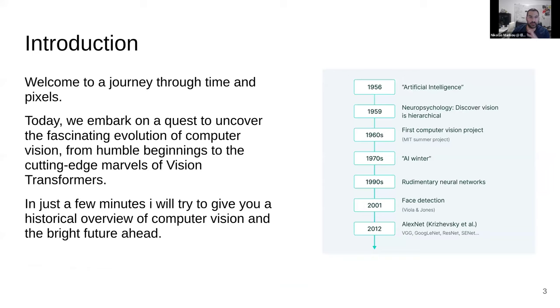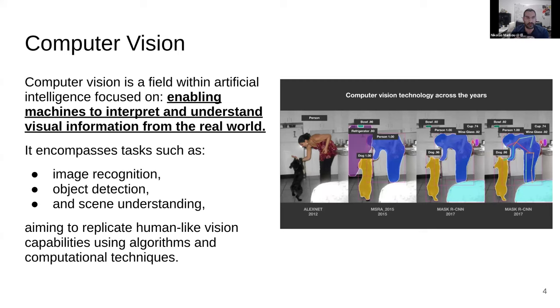Today we're going to take a historic dive from the 70s up until 2024, and we're going to see some amazing innovations that have happened during the last few years. It's been a very exciting journey seeing this stuff evolve. Computer vision has been the main beneficiary, along with NLP, of the AI revolution.